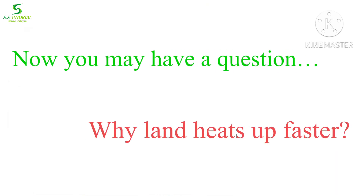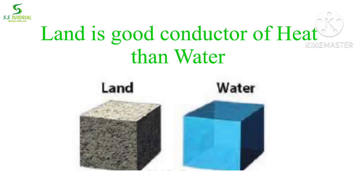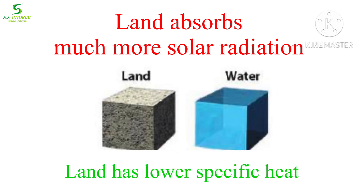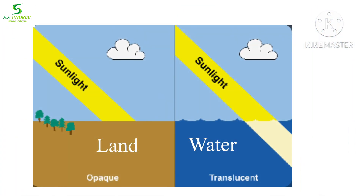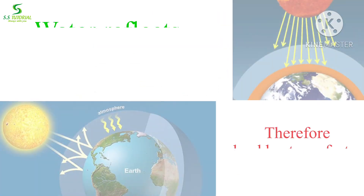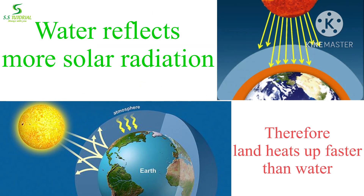During the day, the earth gets heat energy from the sun, and land and water are heated differently. Land is heated faster than water because land is a good conductor of heat, land surface absorbs much more solar radiation, and land has lower specific heat than water. Additionally, land is an opaque body, so it prevents heat from spreading. The sea is a translucent body which spreads temperature deeper.